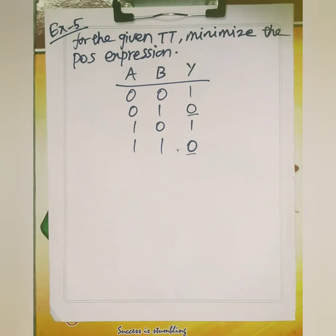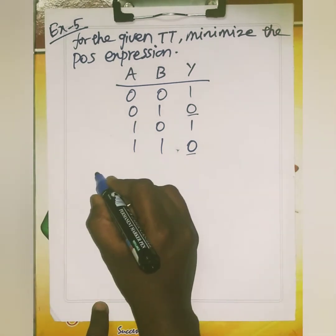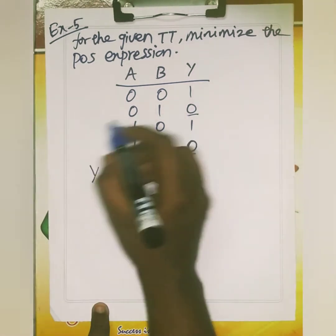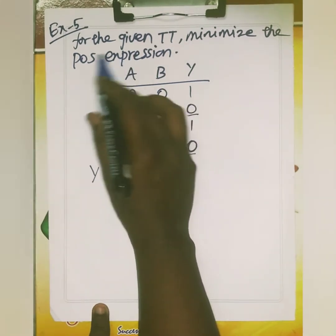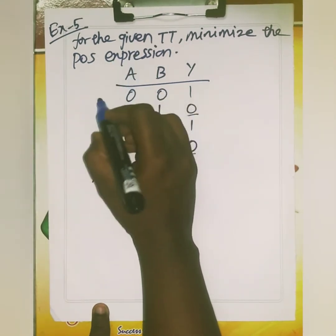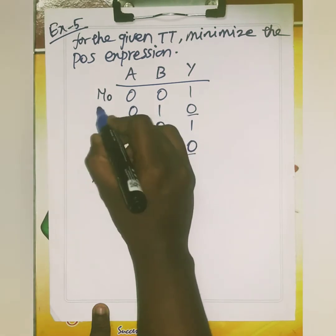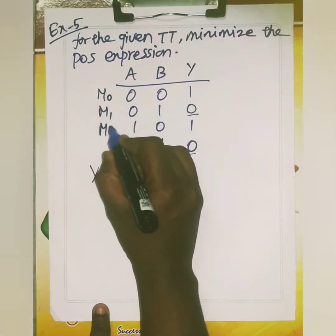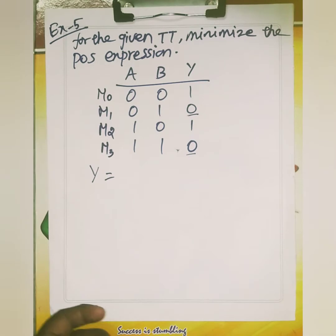This is a very, very important thing to note. Write the function Y equals — first write the max terms. This is POS, so max terms starting from M0, M1, max term 2 and max term 3.